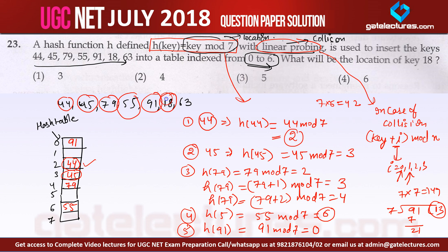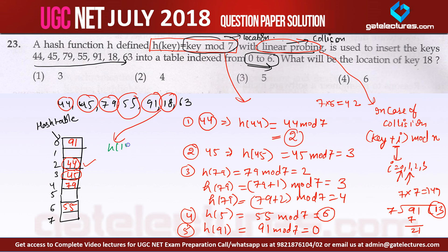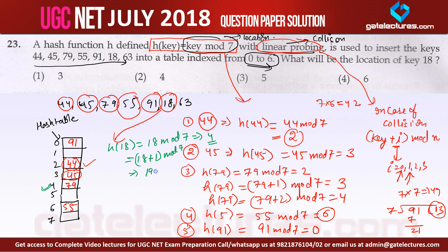The next value is 18. Hash(18) = 18 mod 7, which gives remainder 4 because 7 × 2 = 14. But index location 4 already has an element, so using linear probing: (18 + 1) mod 7 = 19 mod 7 = 5. Therefore, 18 is stored at index location 5.